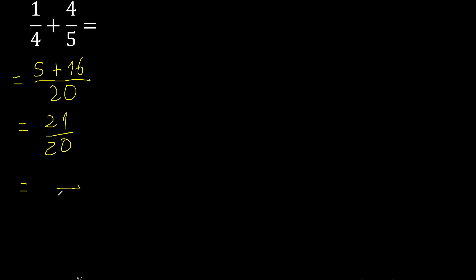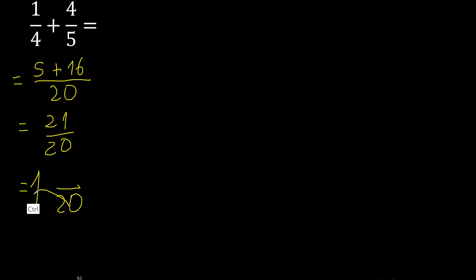Now try with a number. Try with 2: 20 multiplied by 2 is 40. 40 is greater than 21, so try another number — 1. 20 multiplied by 1 is 20. 20 is less, ok.